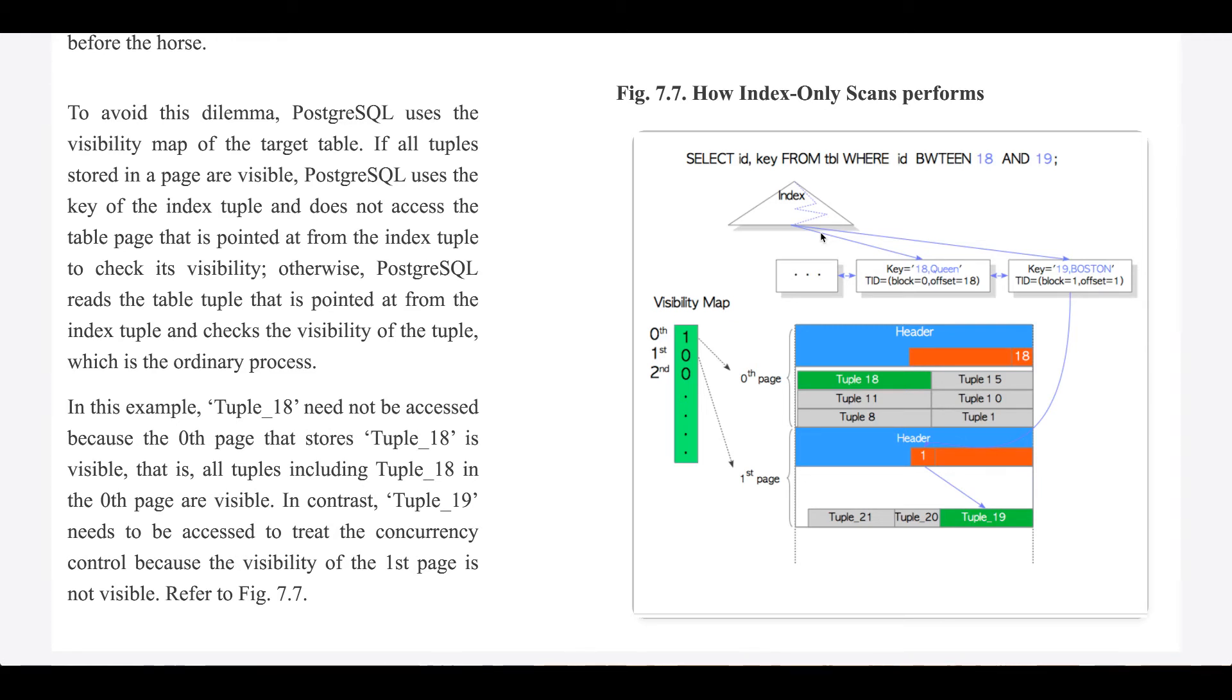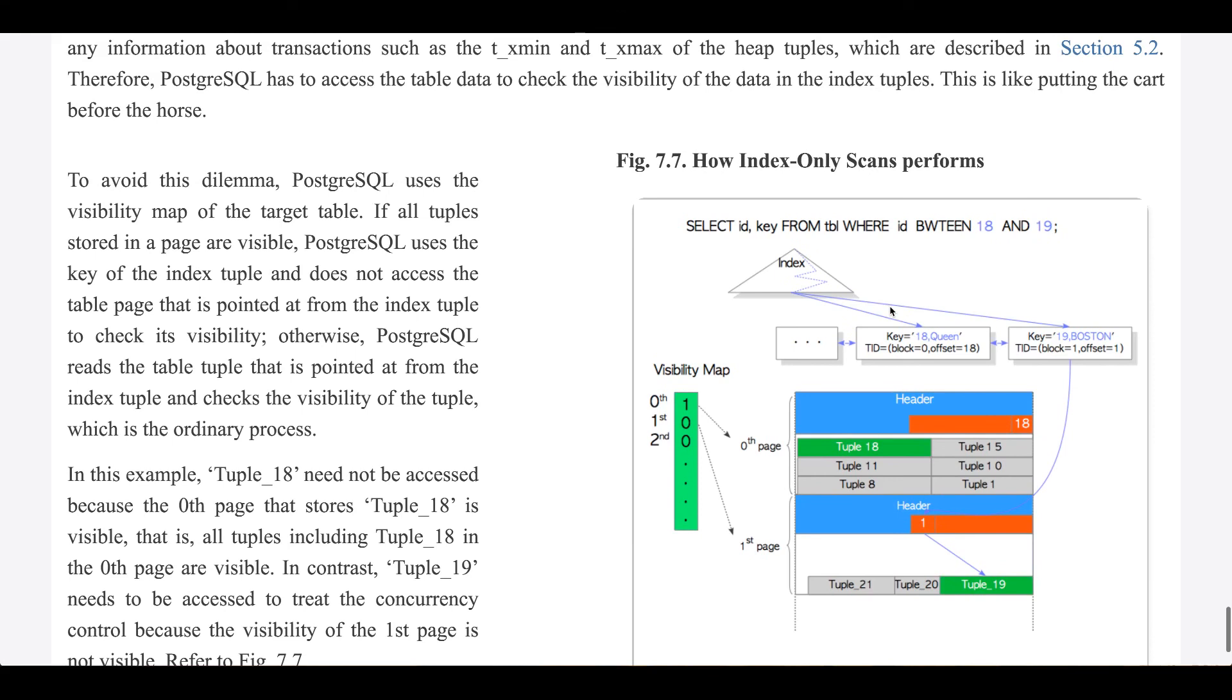In contrast, tuple 19 needs to be accessed to treat the concurrency control because the visibility of the page at index 1 is not visible, referred to figure 7.7.